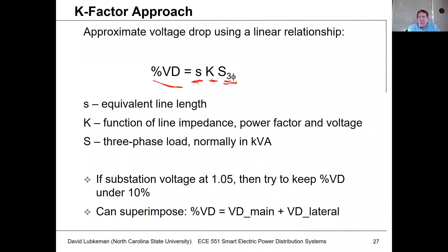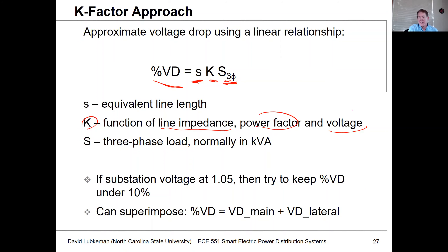If we were going to double the load, we double the voltage drop. This K-factor is a function of the line impedance, a function of the load power factor, and a function of the voltage level that we're working at. We assume the load is going to be balanced, so we're working with three-phase quantities.